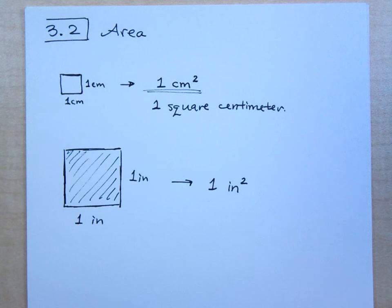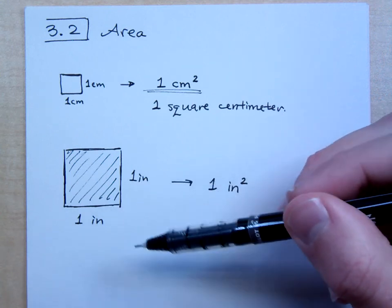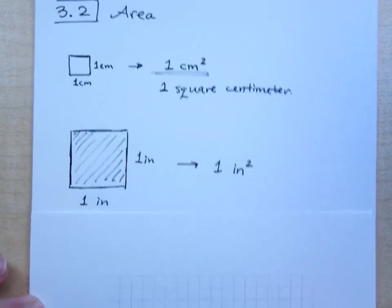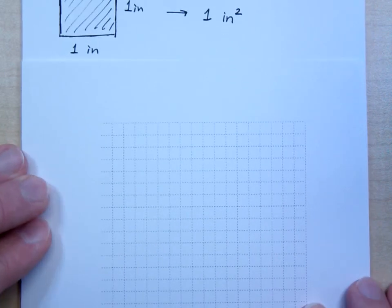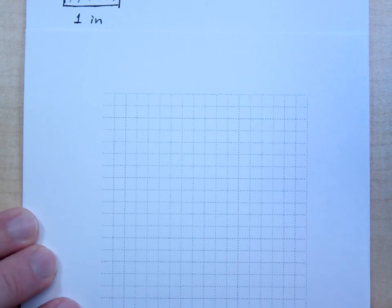So, when we talk about area, we're talking about how many of these squares of a particular unit, whether it be inches, centimeters, miles, whatever, how many of these guys would fit inside a particular shape. That's what we're talking about when we talk about area. It's how many square units you can fit. So, I thought we could do something like this. I don't know if you guys can see this very well, but this is just a grid, like a little piece of graph paper for us.